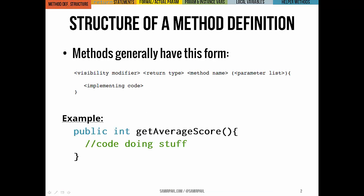This is what the general structure of a method looks like. We have visibility modifiers, the return type, the name of the methods, any parameters it takes, and then all the code that describes what a method actually does.